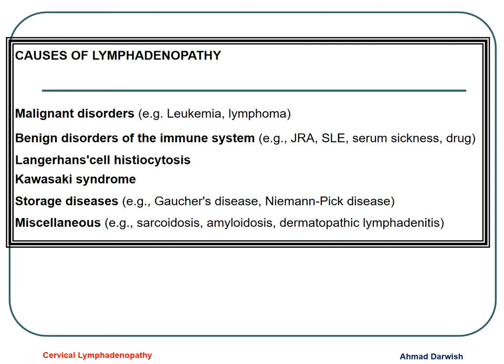It could also be a malignant disorder like leukemia and lymphoma, or other benign disorders of the immune system like systemic lupus or juvenile rheumatoid arthritis. It could be just a reaction to a vaccine or a drug, it could be histiocytosis, some form of lymphomucocutaneous disease like Kawasaki syndrome, storage diseases such as Gaucher disease, or sarcoidosis.